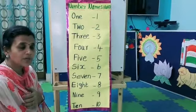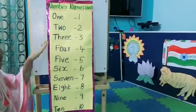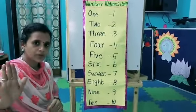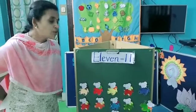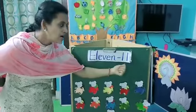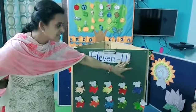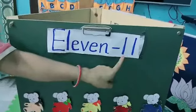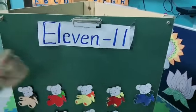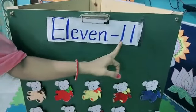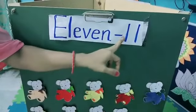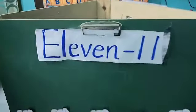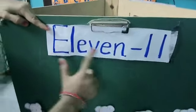Have you all understood? I know very well that you already memorized the spelling of these numbers. So next we are moving to number 11. Next we are going to the number name of 11. See here — what is this number? This is 11. We already know this number 11, but we should also know the spelling of 11. So today we are learning the number name of 11.